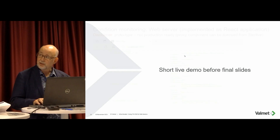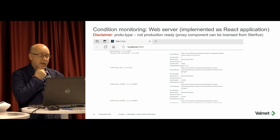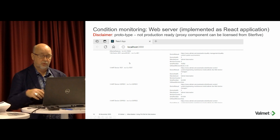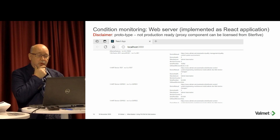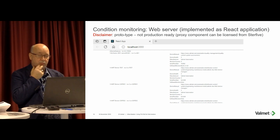I have also implemented a small condition monitoring web server built in React that reads directly from the OPC UA PA-DIMM server data. It shows device manual, device health, manufacturer, revision counter, serial number, software revision — everything coming directly from the PA-DIMM server. It's currently without styling but uses a reactive component that is truly interactive and responsive. It's a proxy component that can be licensed from Stir Five — this is just a prototype, but I think this is what the future will look like for web-based condition monitoring.